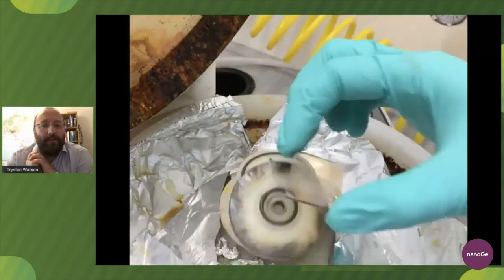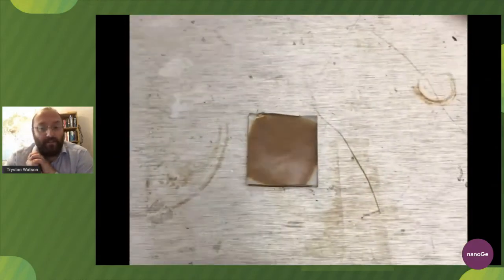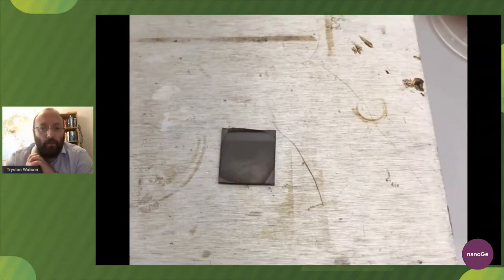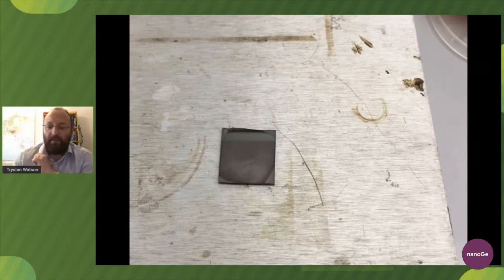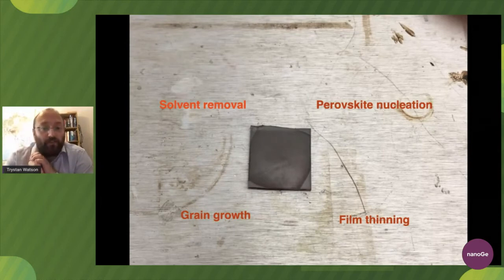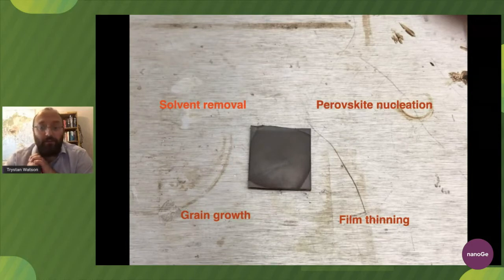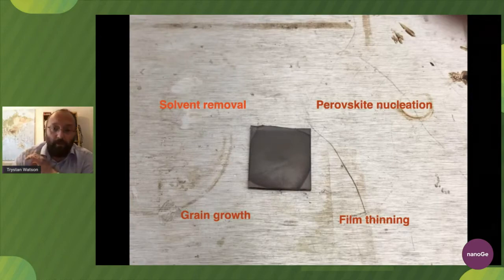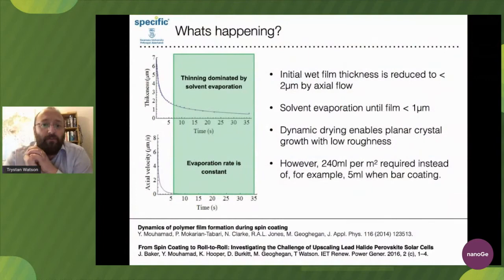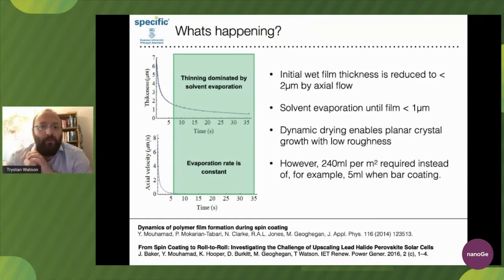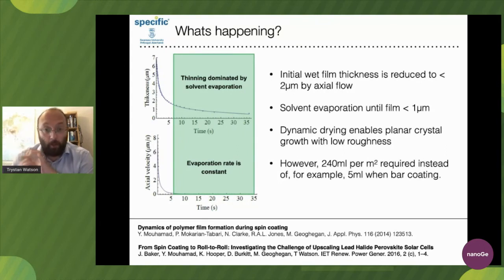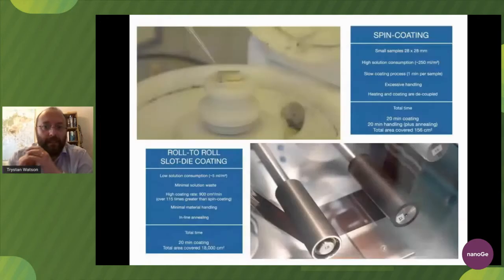In spin coating, you apply the perovskite, then the anti-solvent; the spin finishes, it's removed and placed onto a hot plate. In those two processes using relatively low-cost equipment, we produce a working perovskite film. In that time, quite a lot of chemistry has gone on: we've removed the solvent, nucleated the perovskite, grown the grains, and thinned the film - actually quite a lot accomplished in those two rapid processes.